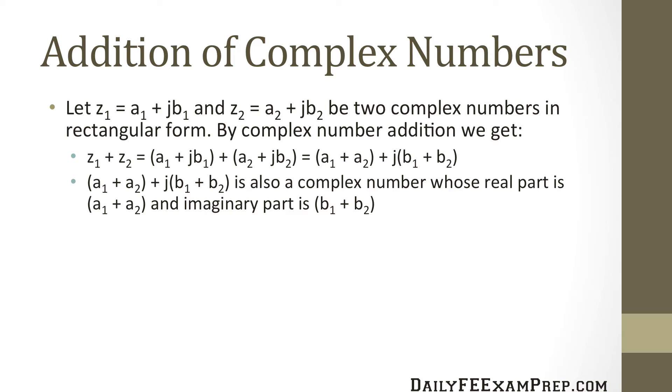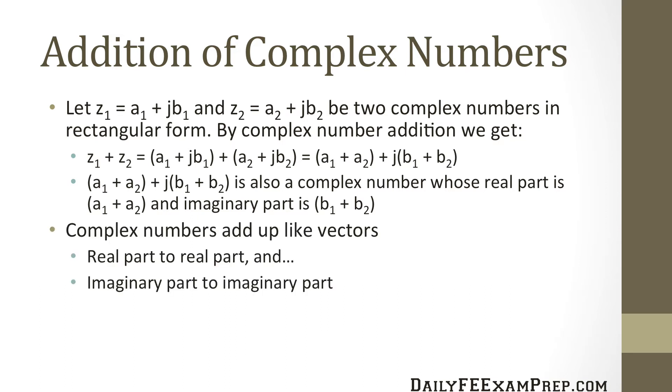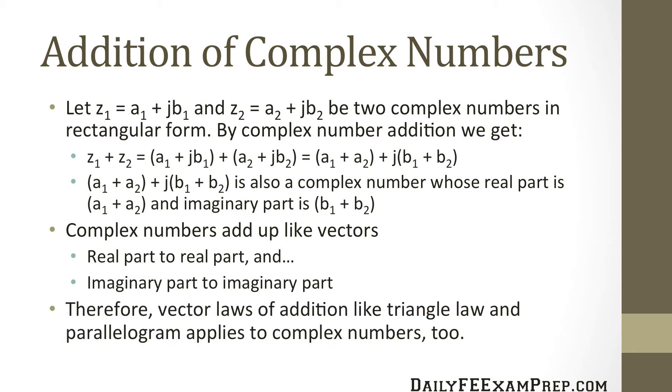Now a1 plus a2 plus j times b1 plus b2 is also a complex number whose real part is a1 plus a2 and the imaginary part is b1 plus b2. Complex numbers add up like vectors so real part goes to real part and imaginary part goes to imaginary part. Therefore the vector laws of addition like the triangle law and parallelogram apply to complex numbers too.